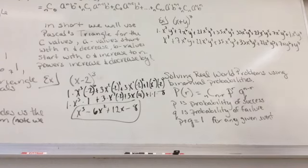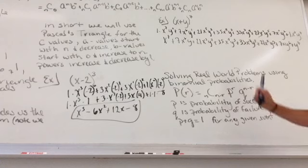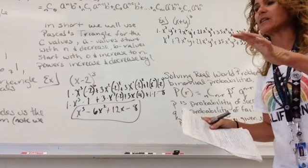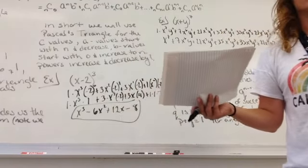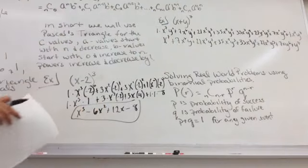Alright, we learned to solve real-life problems using binomial probabilities. So, this is our form that we're going to use. P is the probability of success. Q is the probability of failure. Failure and success have to add to one whole. So, if it's 80% success, it would be 20% failure. If it's 40% success, it would be 60% failure.